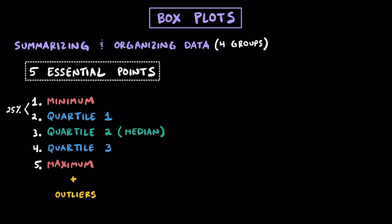Between each of these five essential points, we're going to be able to find 25% of our data. And just like you've learned previously, the median separates all of the data into two groups — 50% above it and 50% below it.